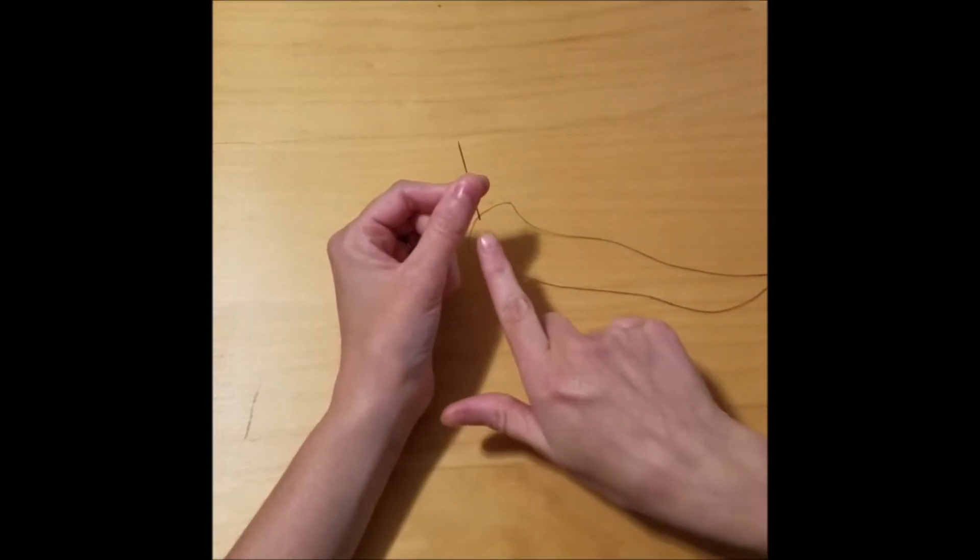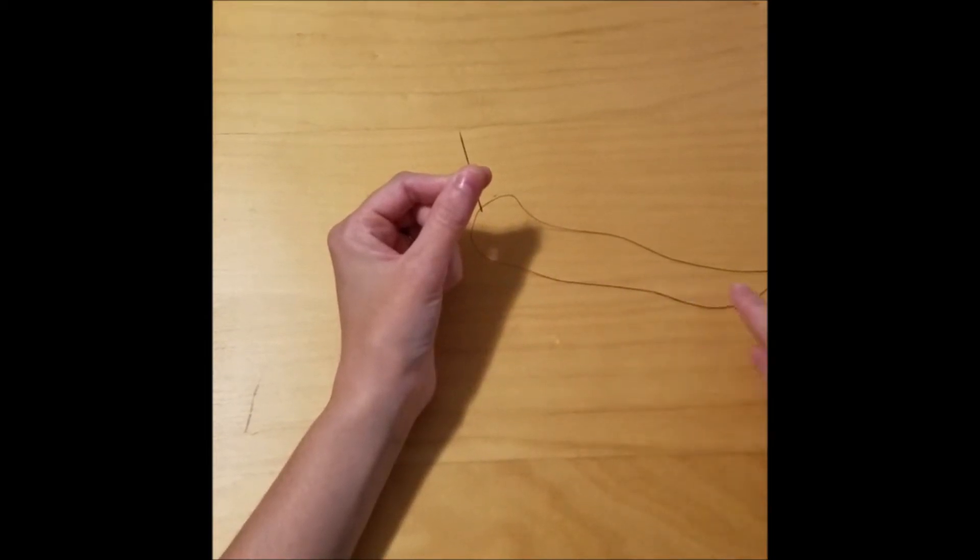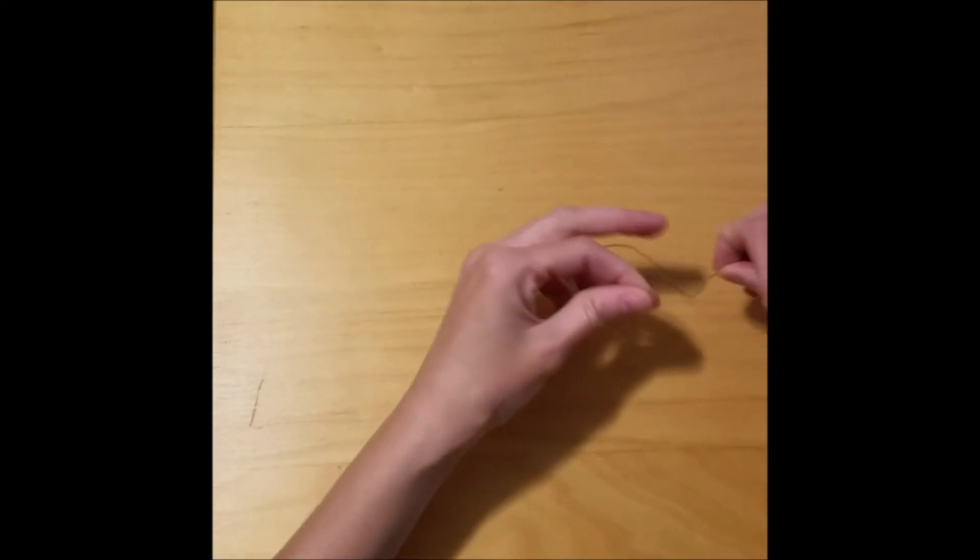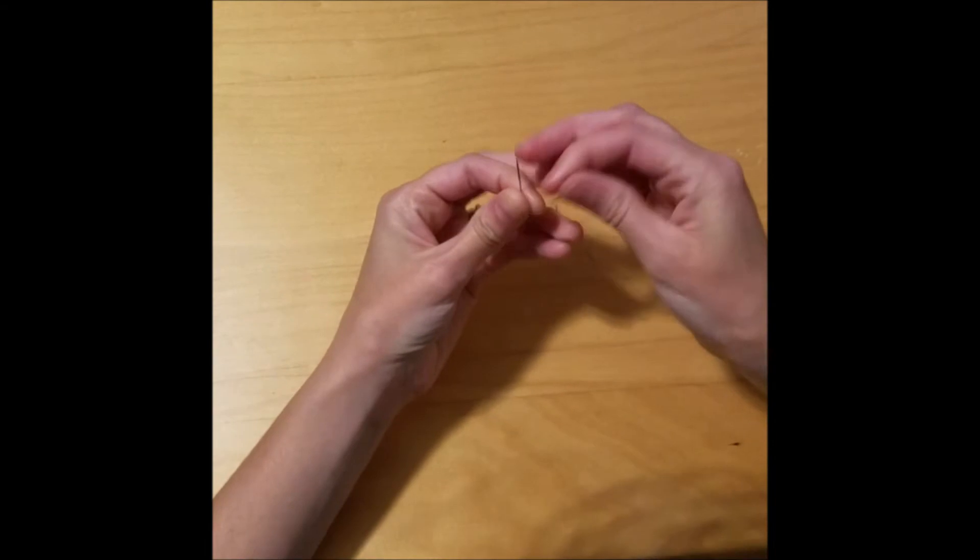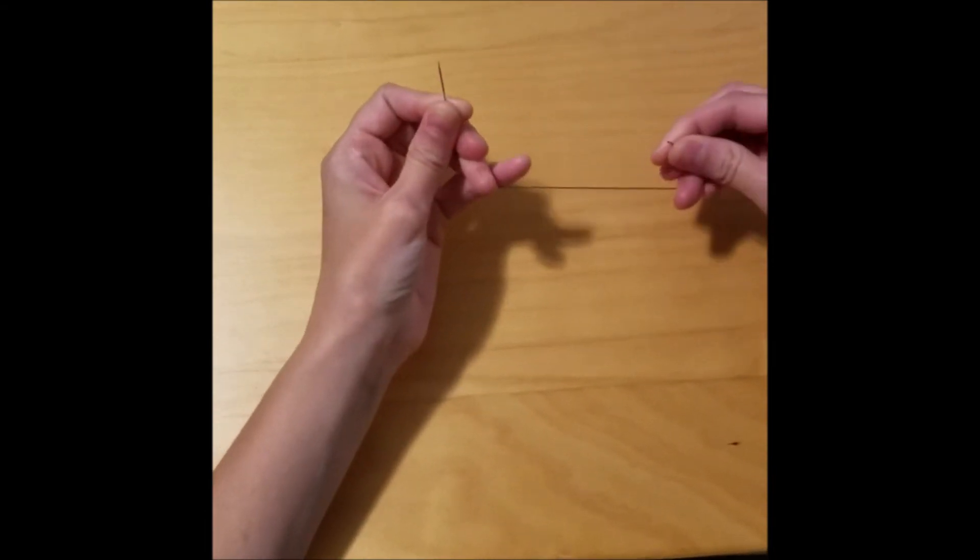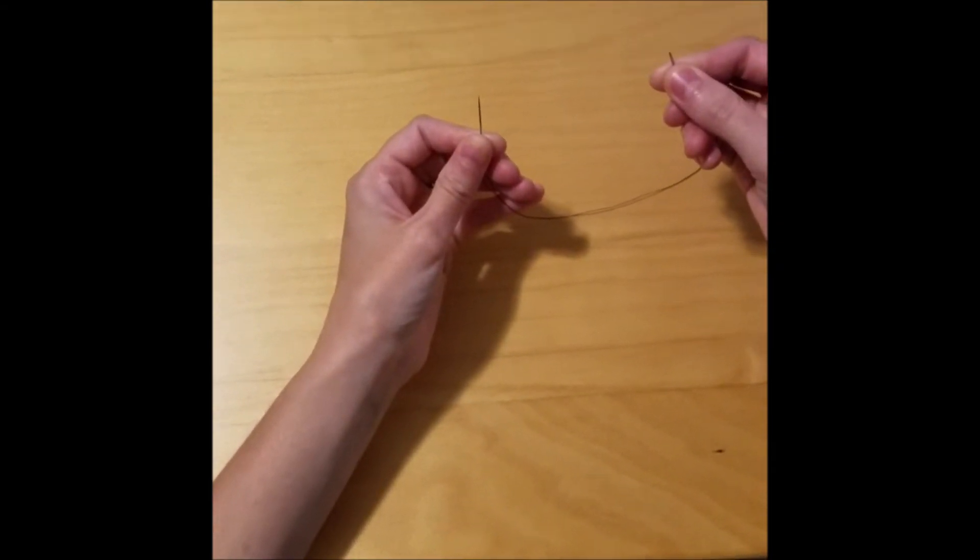I started by putting my thread through the eye of the needle so I have a double stranded thread. Next, I have my needle in the left hand and string and thread in the right hand.